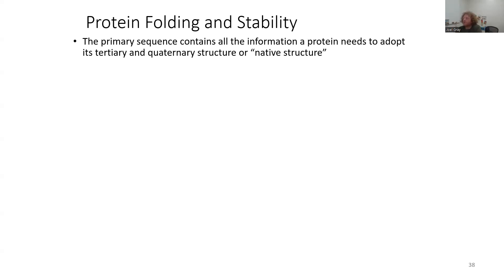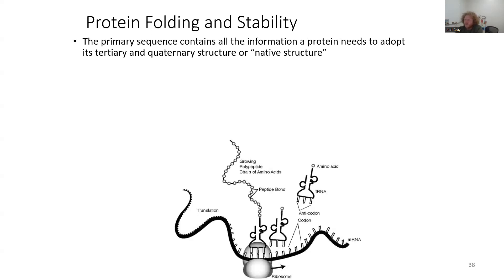The primary sequence contains all of the important information that a protein needs to adopt its tertiary and quaternary structure — its native fold. Here's a snapshot of what happens in a cell. We have an mRNA transcript produced from genomic DNA, and then we have the ribosome where the mRNA goes. At the ribosome, tRNAs with anti-codons align with codons found on the mRNA. Those tRNAs begin assembling a growing polypeptide chain of amino acids at the ribosome, processing the mRNA and causing the polypeptide chain to grow longer and longer.